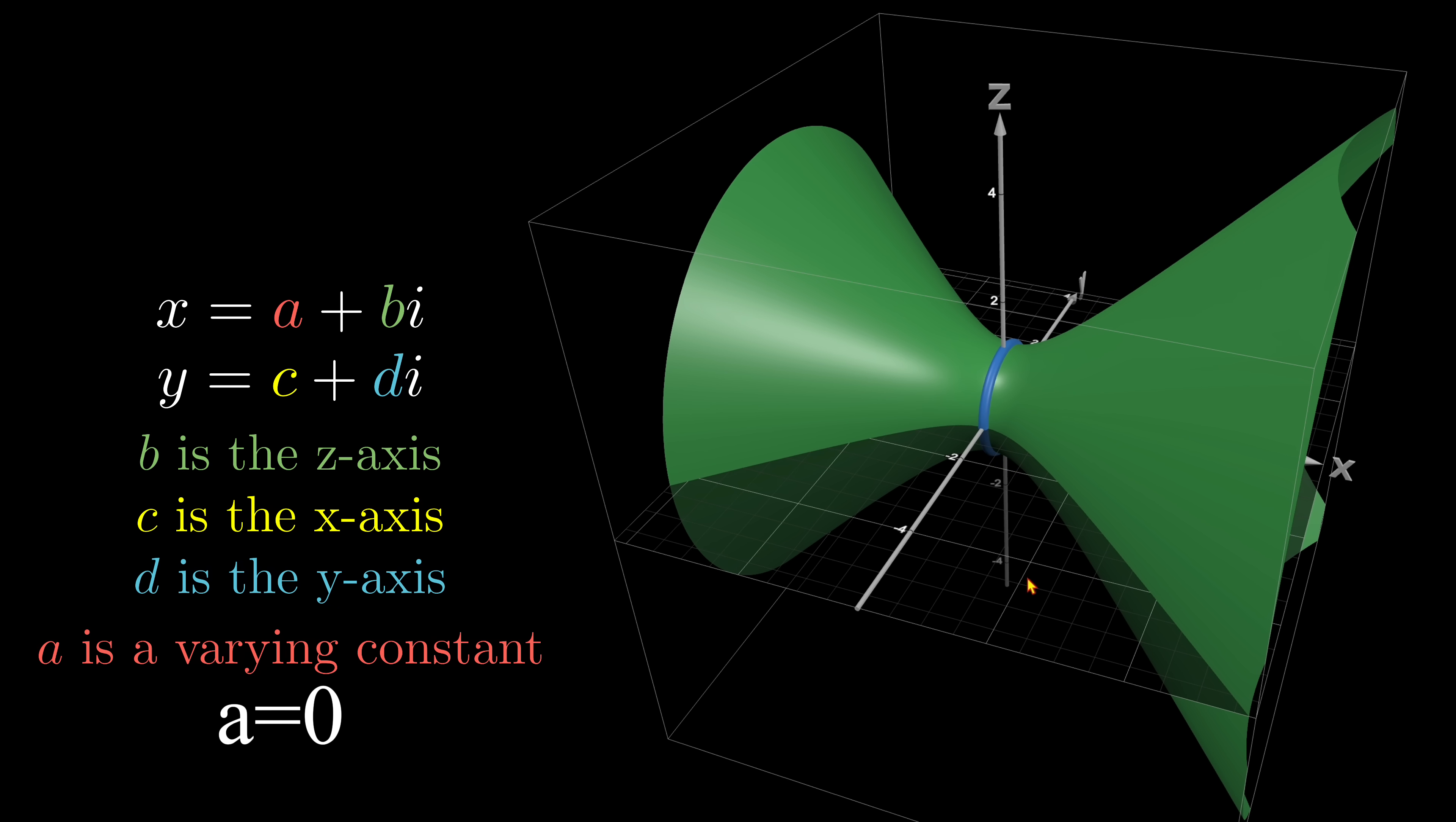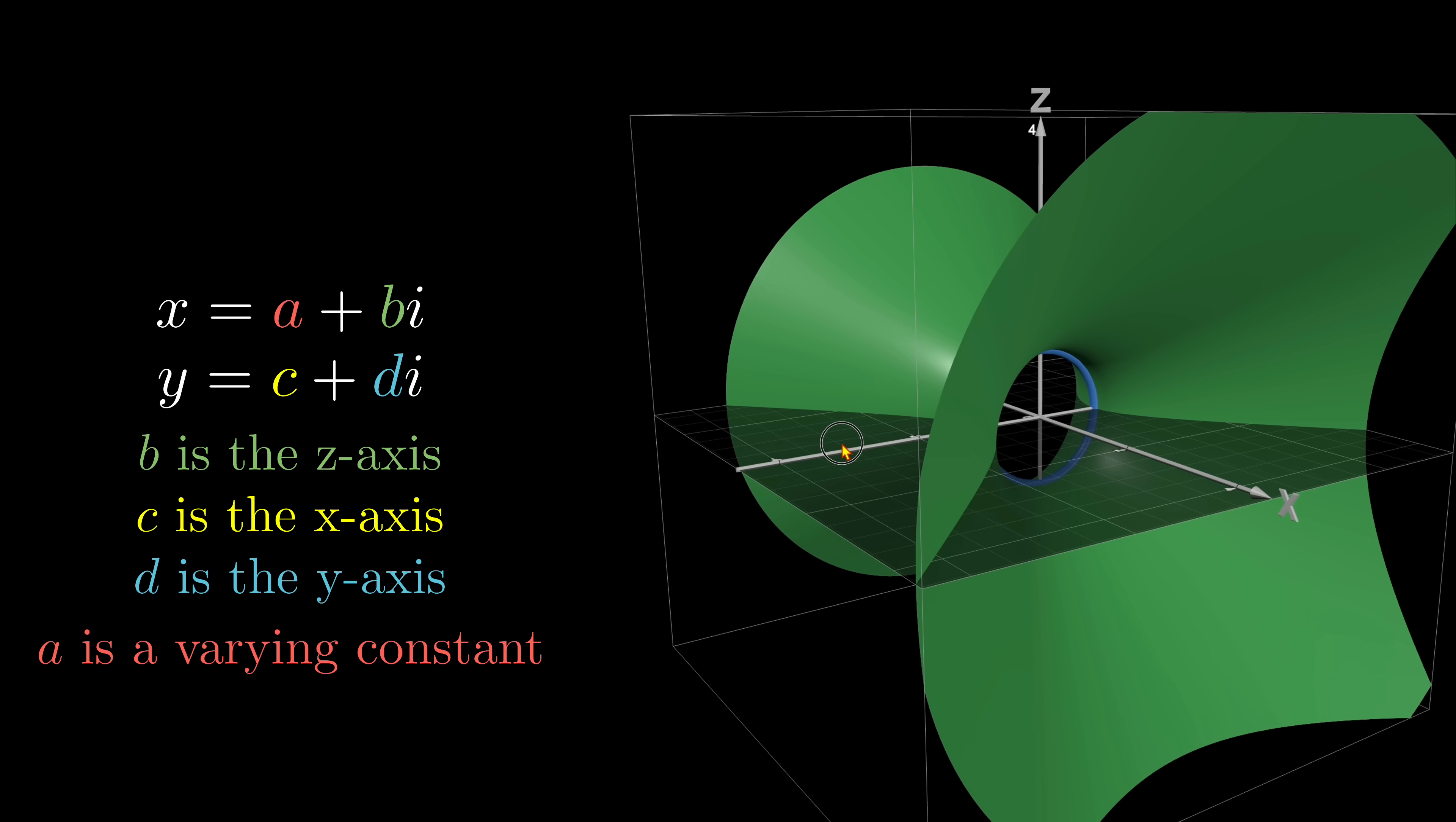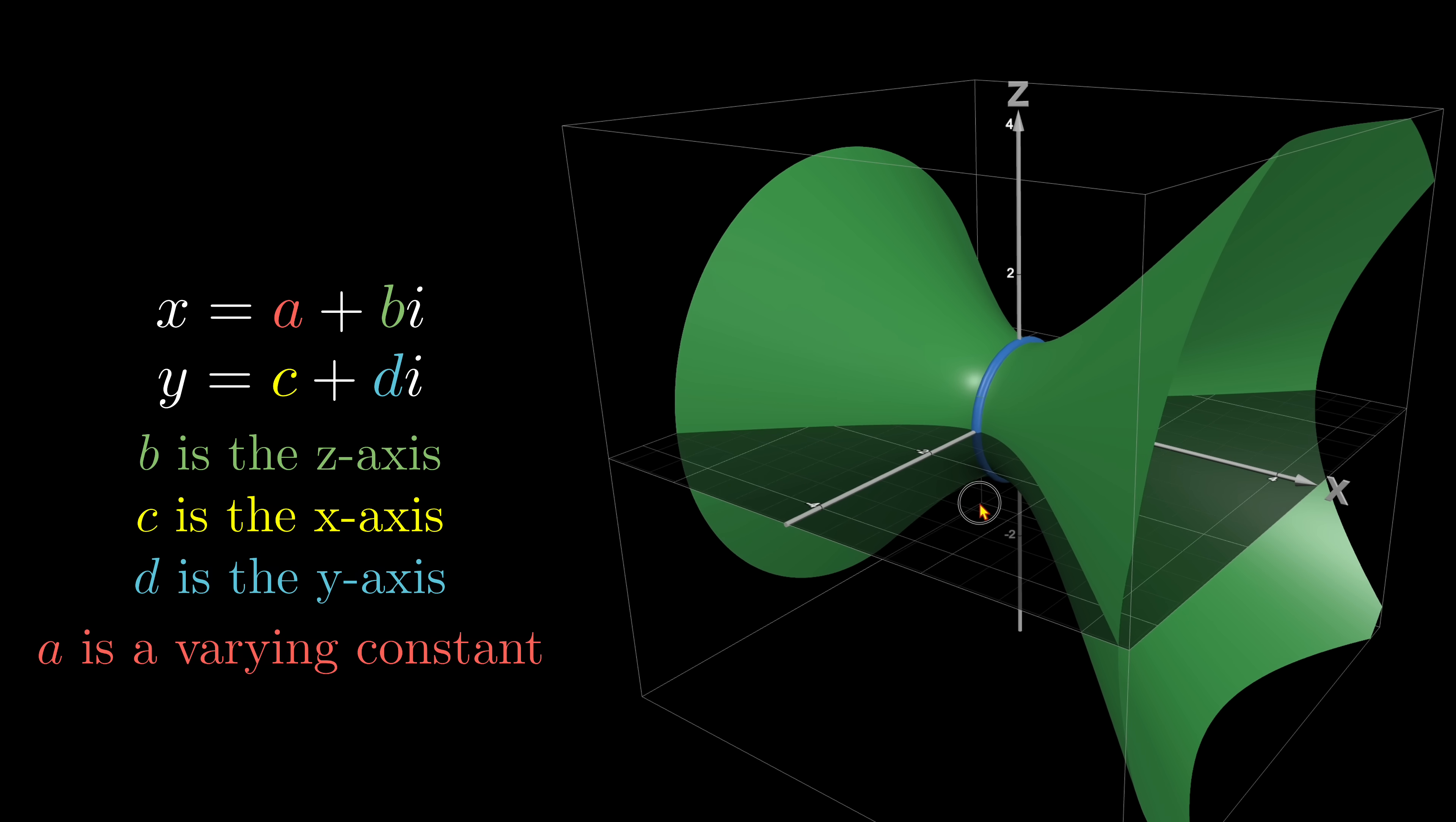And we do see that when a is zero, a unit circle appears on the y-z plane, which means both the real parts of our original x and y are zero. We have a pure imaginary circle.